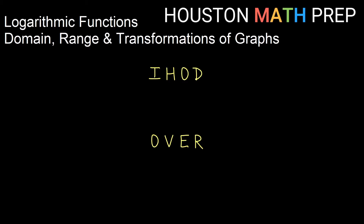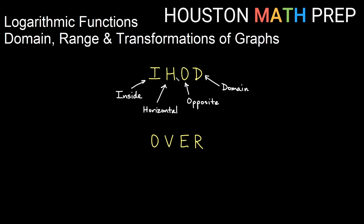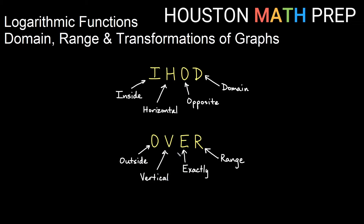We'll be doing some transformations of graphs with logarithms. Remember the systems of thought: IHOD and Over. IHOD says when I have a change inside the logarithm, that will be a horizontal change — opposite what we expect based on what we see — and it may possibly affect the domain. Over means an operation outside the logarithm, which will be a vertical change that changes exactly what we expect to see in the formula, and it may affect the range.